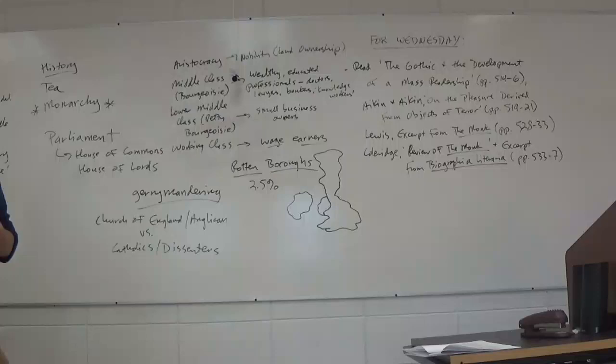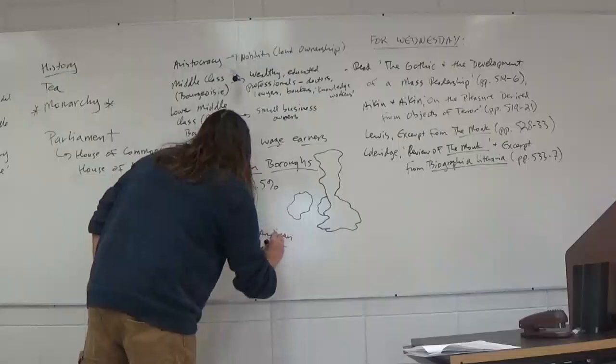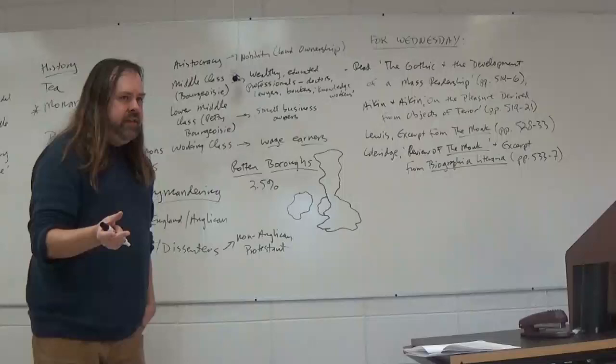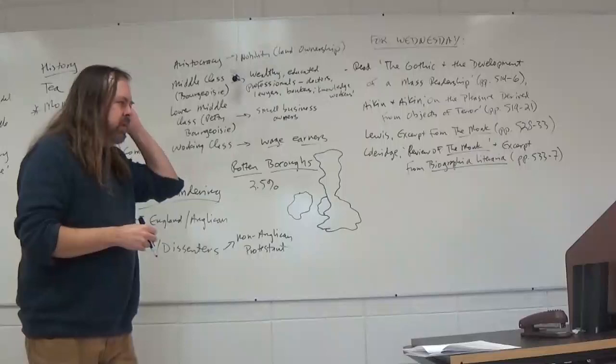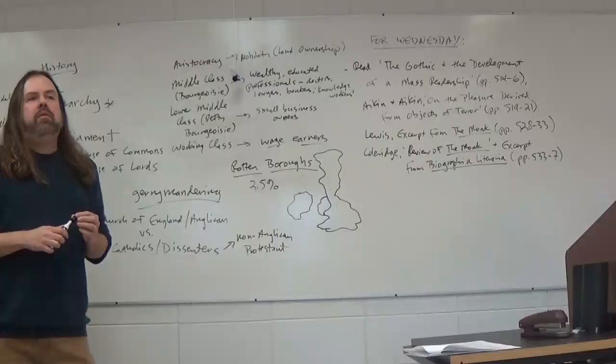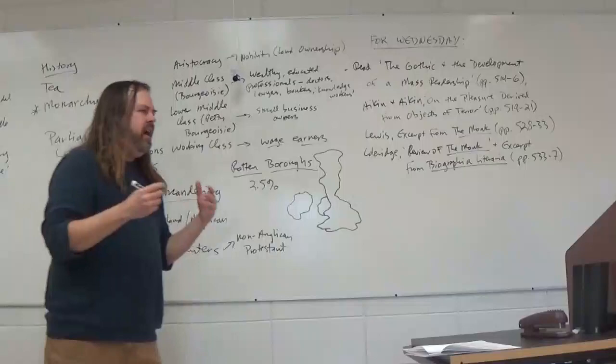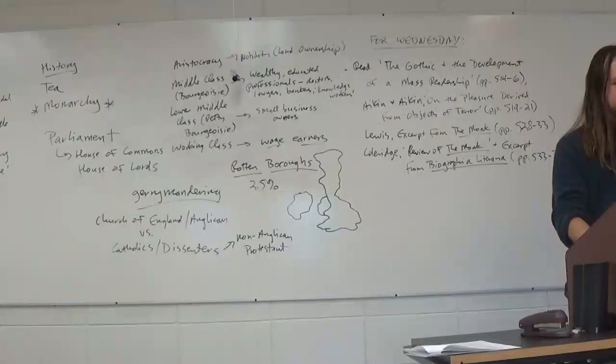Dissenter basically means any non-Anglican Protestant - Methodists, Quakers, Baptists, Presbyterians. Most people in the lowlands of Scotland would have been Presbyterians. In Ireland and the highlands of Scotland, the majority of people were Catholic.